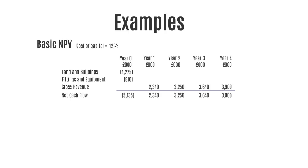The next thing we need to do is to find the relevant discount factors. We can use the discount tables to look up the relevant figures, so having the tables handy is a really good idea. You'll find the discount factors for year zero to year four, where the cost of capital is 12%, to be the following.